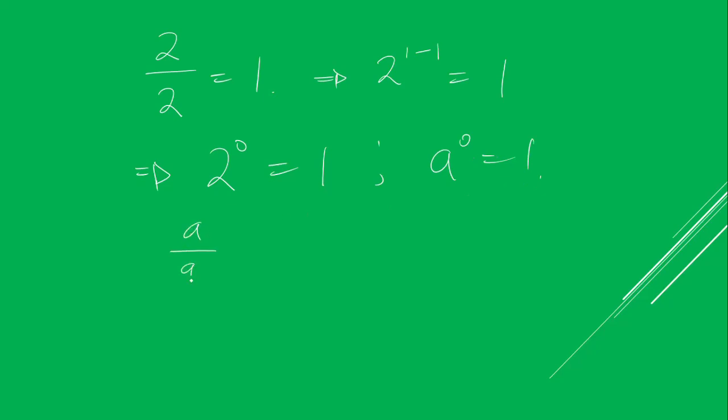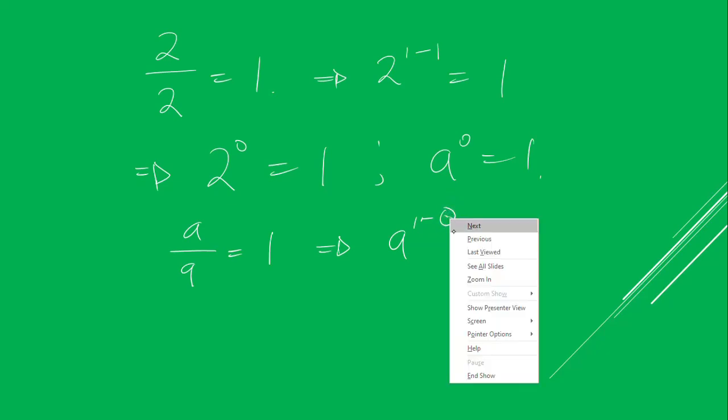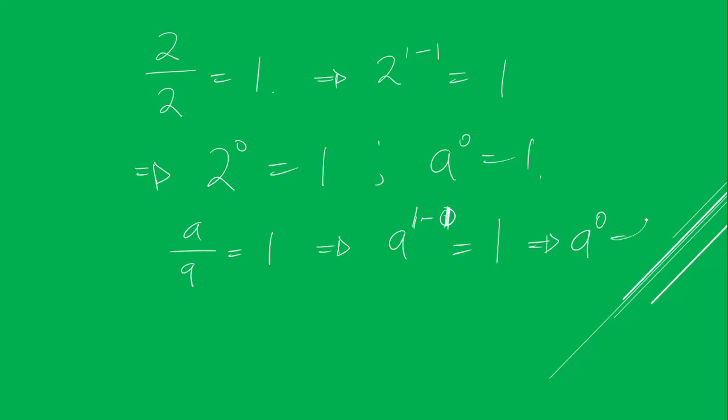Because a divide by a is equal to 1, which implies that a raised to power 1 minus 1 is equal to 1, which also implies that a raised to power 0 is equal to 1.